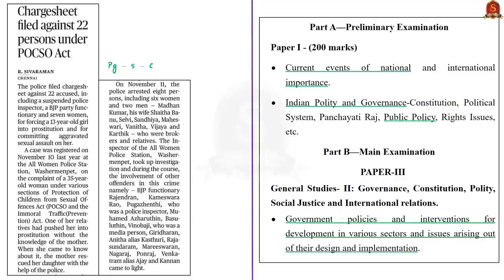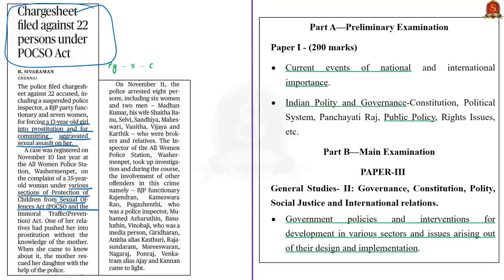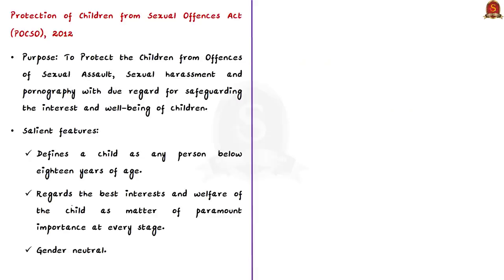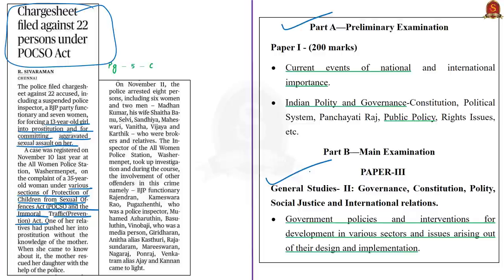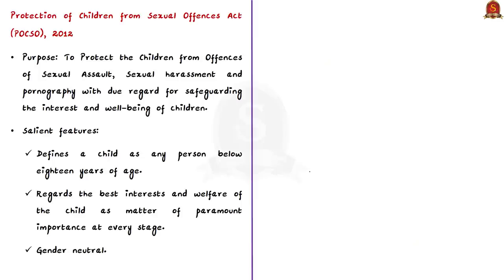Now let's move on to the next news article. Tamil Nadu police have filed a charge sheet against 22 persons for forcing a 13-year-old girl child into prostitution and for committing aggravated sexual assault on her. The case was registered under the Protection of Children from Sexual Offenses Act 2012 and also under the relevant provisions of the Immoral Traffic Prevention Act of 1956. In this context, let us discuss some salient features of the POCSO Act. The POCSO Act 2012 was enacted to protect children from the offenses of sexual assault, sexual harassment and pornography, with due regard for safeguarding the interest and well-being of children.